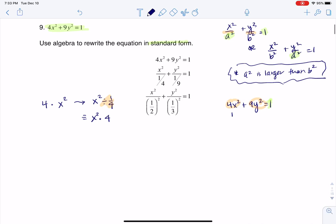What I can do here now is say this is x squared divided by 1 fourth. Similarly, over here I can mess with the 9 and say this is equal to y squared over 1 ninth, and that is equal to 1.